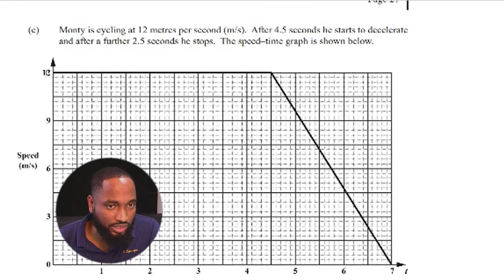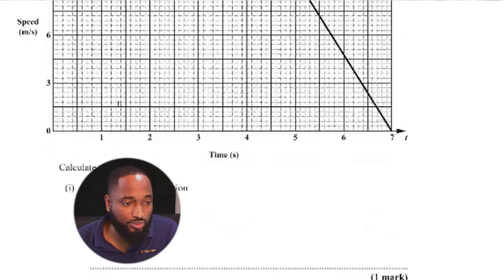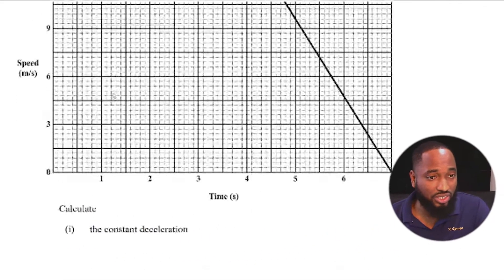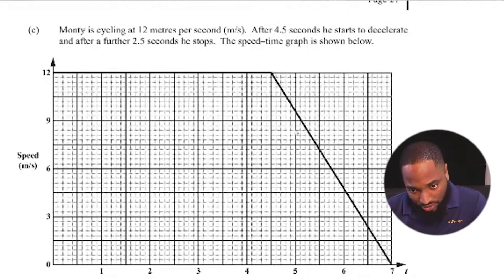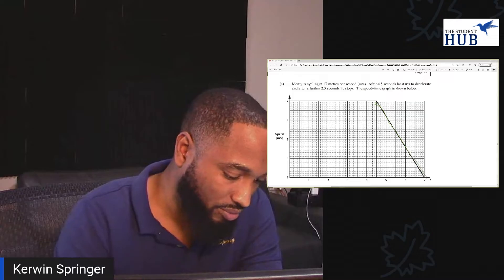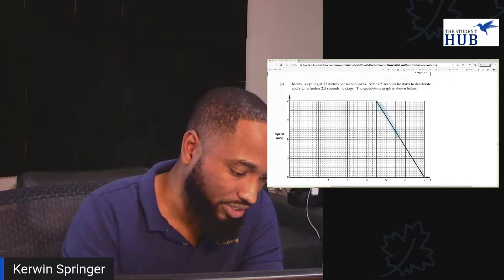12 meters per second. After 4.5 seconds, he starts to decelerate. And after a further 2.5 seconds, he stops. The speed time graph is shown below. So we want to calculate the constant deceleration. So the deceleration happened during this segment of the graph here. During this segment of the graph, we had a deceleration taking place.